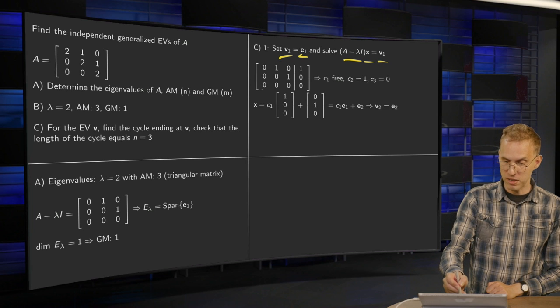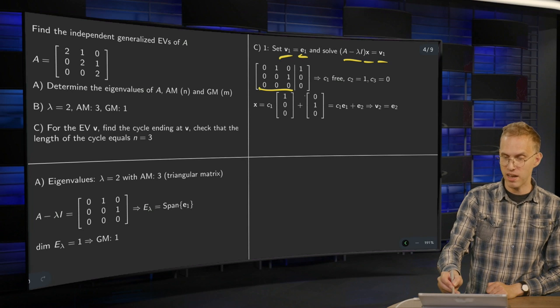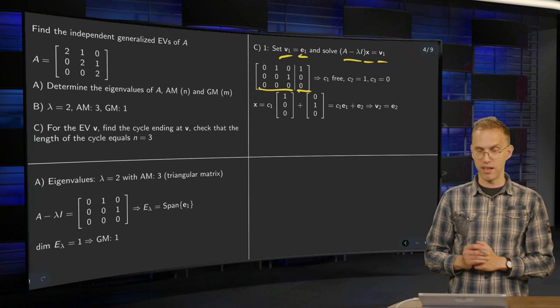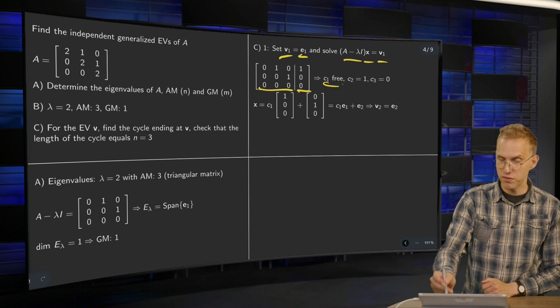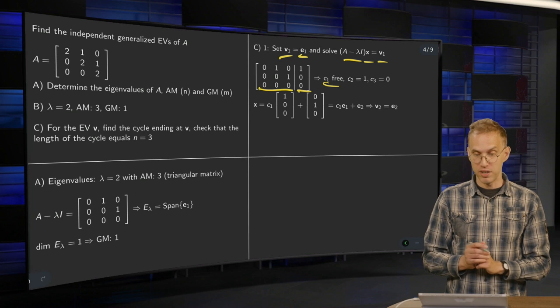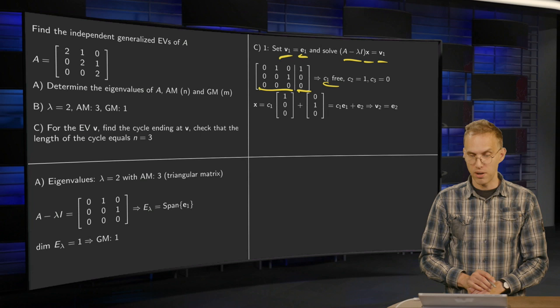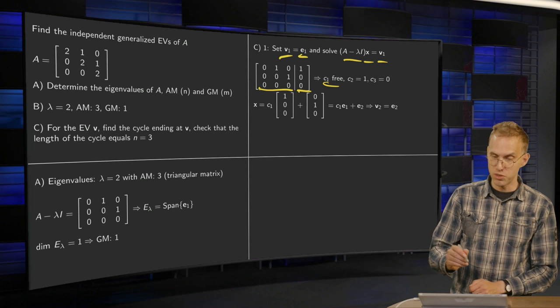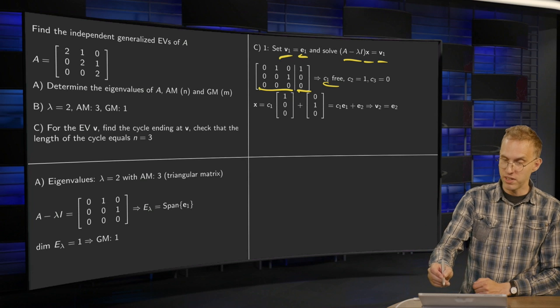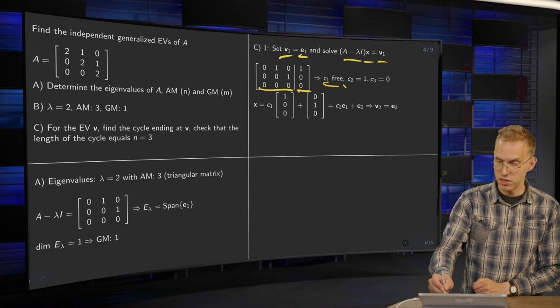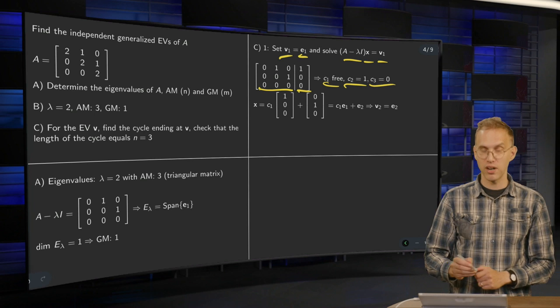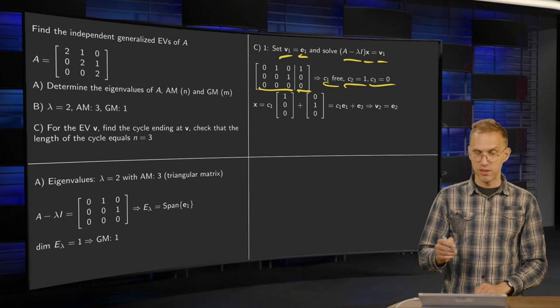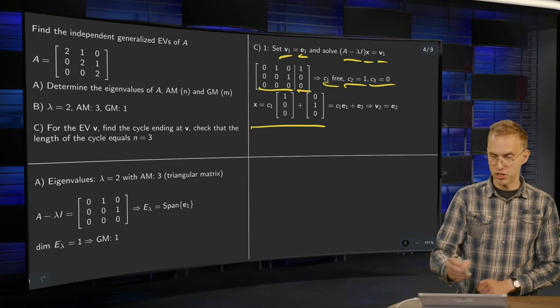So from the augmented matrix, here we have our A minus lambda I augmented with V1, which equals E1. We solve. We see C1 is 3. Now pivot. And we see 0 times C1 plus 1 times C2 plus 0 times C3 equals 1. So C2 equals 1. And the second row yields C3 equals 0. And we can write down our solution x over here.